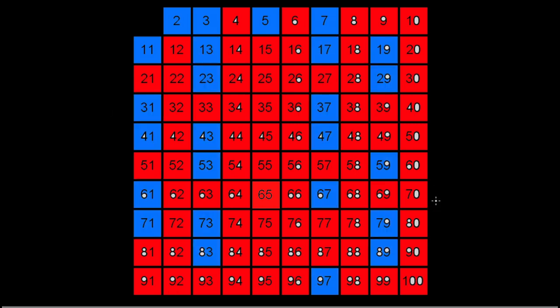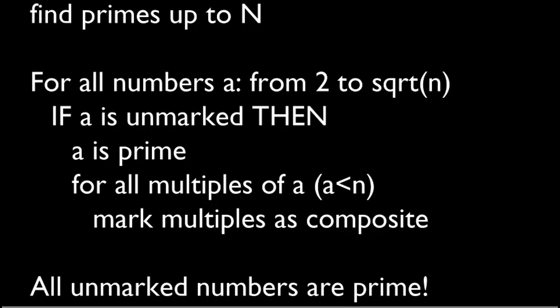Just to generalize how we do this so we could write up a program to perform this: if we want to find all primes up to some number n, we first create a main loop. So we have for all numbers a from 2 to the square root of n, so notice here...